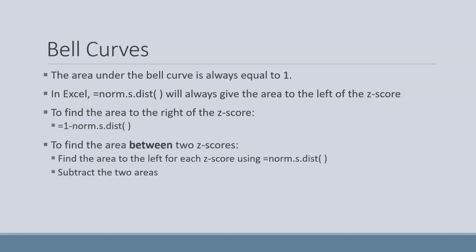Sometimes we need to know areas between two different z-scores. A z-score is just like an address on the bell curve. It's just telling you where you are on this bell curve. So if we need to find the area between two of those z-scores,